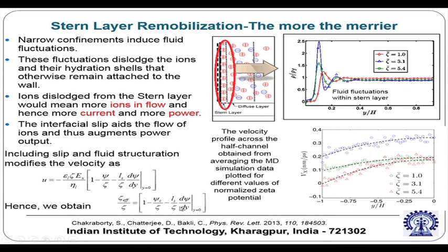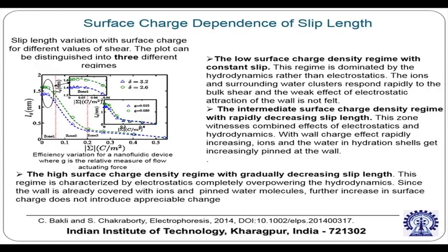One can have a non-linear amplification of the effective zeta potential as a function of the bare zeta potential depending on the slip length. Our group reported extensive molecular dynamics, lattice Boltzmann, and analytical studies based on this conjecture, published in Physical Review Letters. The effective zeta potential — which indicates the effective charge condition of the substrate — depends on the slip length, and this slip length can therefore non-trivially alter the energy conversion characteristics.